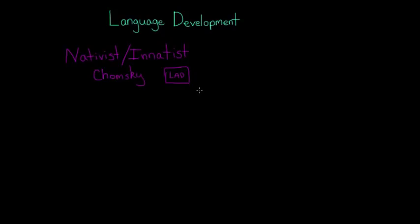And this isn't really supposed to be in a specific part of the brain. It's just an idea that this ability exists. And this works because he thought that all languages shared a universal grammar or the same basic elements. So all languages would have nouns, verbs, things like that.